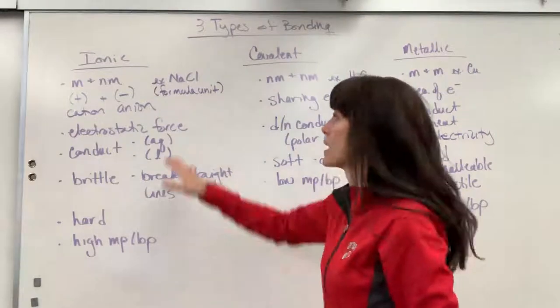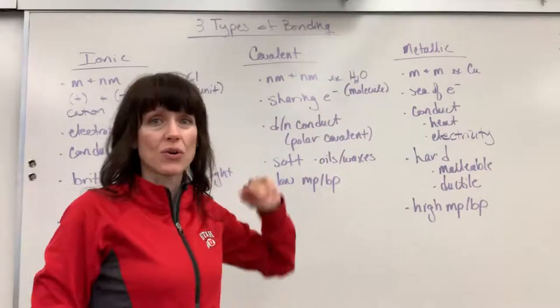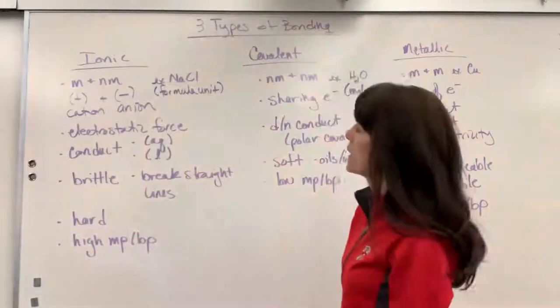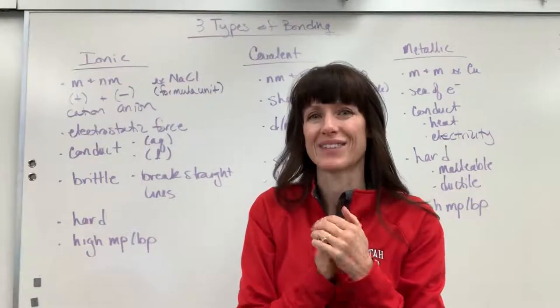If I were to rank these, ionic is the strongest of the bonds. Second is metallic. Third is covalent. Covalent is the weakest. So super, super strong attraction between the positive negative, just like magnets.